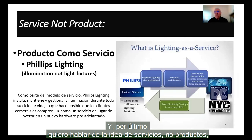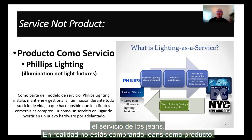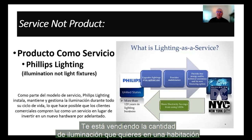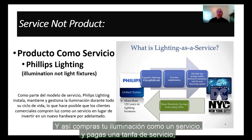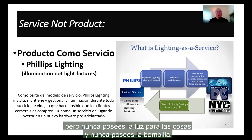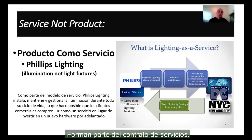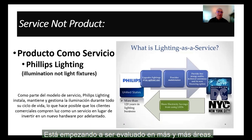Lastly, I want to talk about the idea of services, not products. This is a little bit like the jeans example, where you're renting the service of the jeans — you're not actually buying jeans as a product. Another example is Philips Lighting, which isn't selling you light bulbs or light fixtures. It's selling you the amount of illumination that you want in a room or a building. You buy your lighting as a service and pay a service fee, but you never own the light fittings and you never own the bulbs — so you never have to buy, replace, or service them. They are part of the service contract. This is another change in business model beginning to be evaluated in more and more areas.